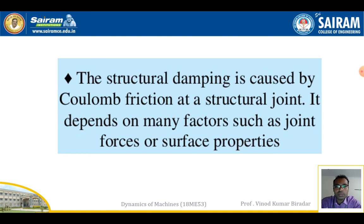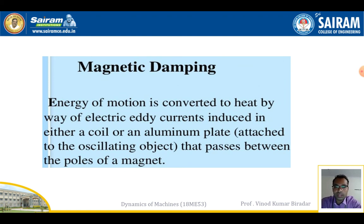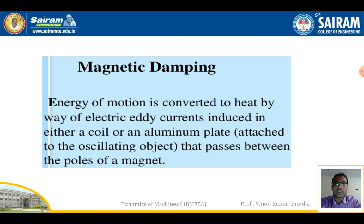Structural damping is also caused by Coulomb friction at structural joints, depending on factors such as joint forces and surface properties. The fourth type is magnetic damping, where the energy of motion is converted into heat by electric eddy currents induced in a coil or aluminium plate attached to an oscillating object passing between magnetic poles. Energy dissipated by microscopic slip between connected members at their interface under fluctuating loads is called interfacial damping.